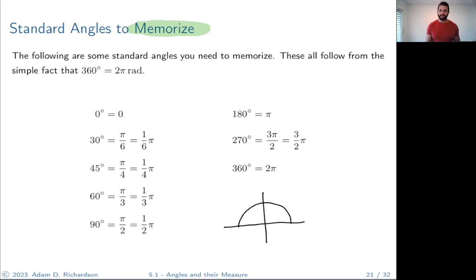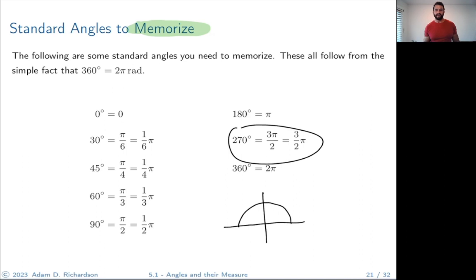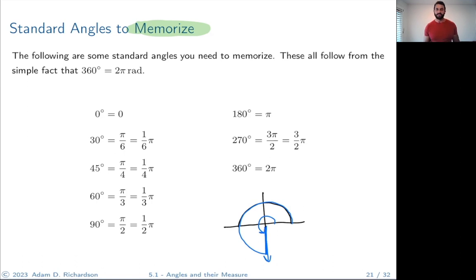Two hundred seventy degrees is 3π/2 — three halves of pi, or one and a half pies. Count out one pi and then half of a pi, and you end up at 270 degrees. That angle is 3π/2 or equivalently one and a half pies — 270 degrees.